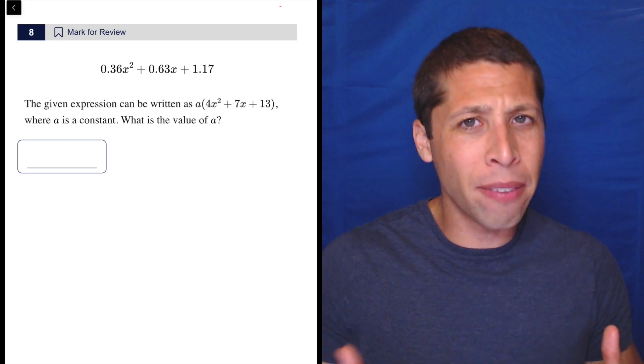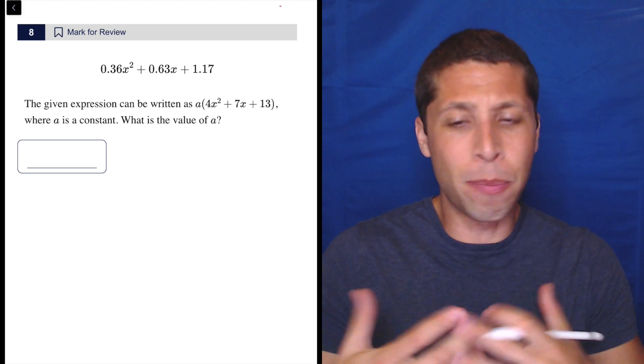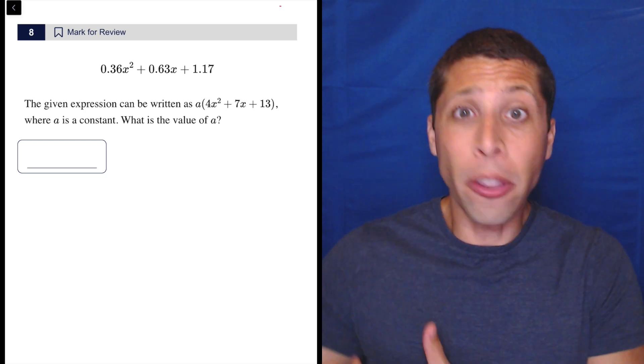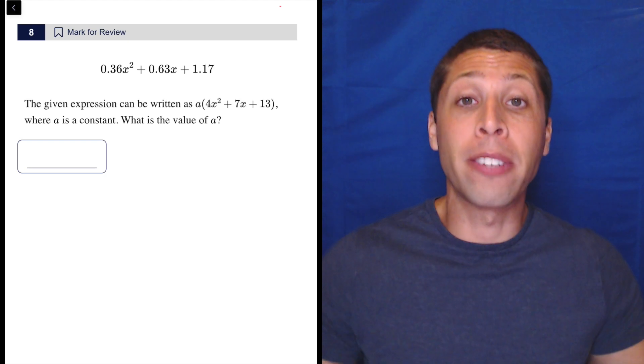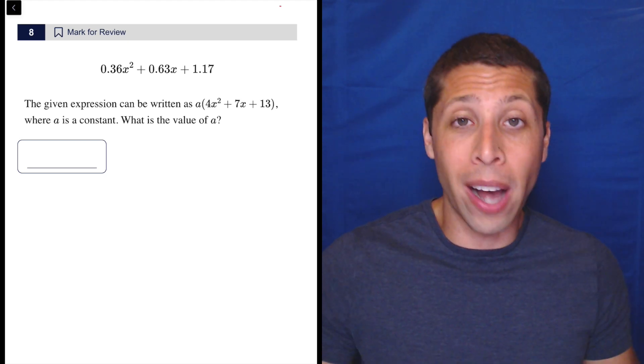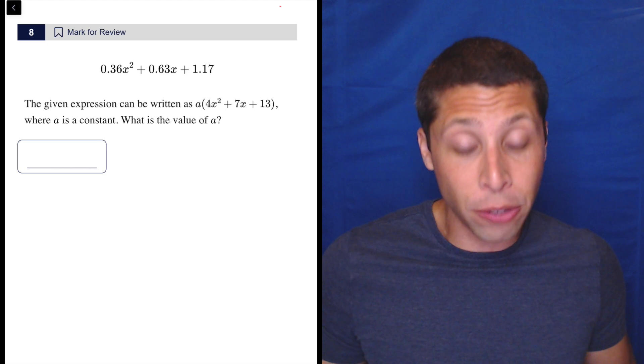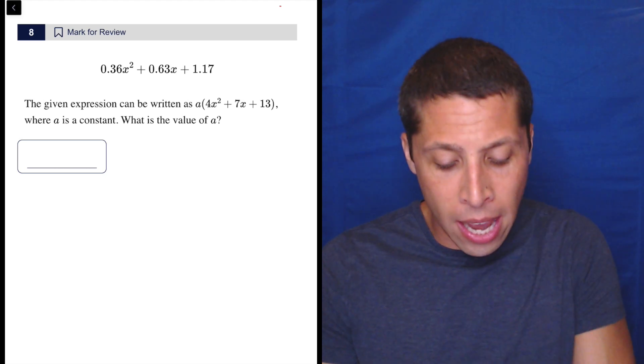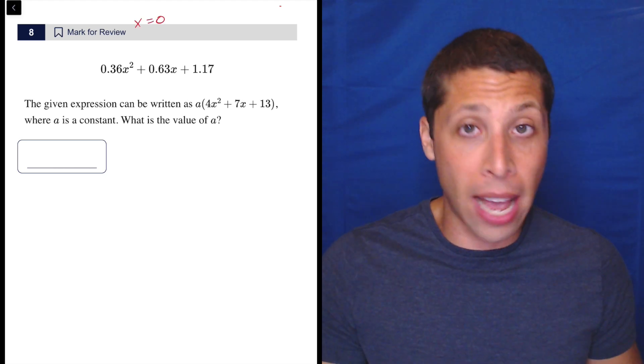But the only way to find a when we have an equation with basically two variables is if the other variable doesn't matter. The other variable somehow disappears. So that's a clue. We can probably make it whatever we want. It's going to be a carry through. Even though we don't have answer choices here, I still see a very clear opportunity to make x equals zero.